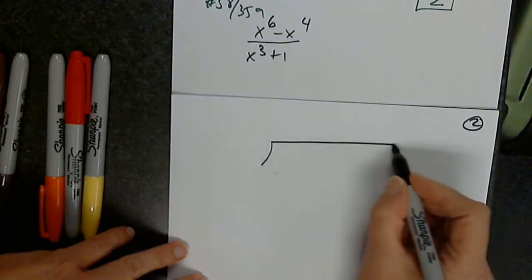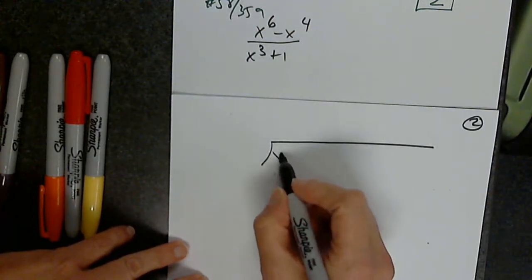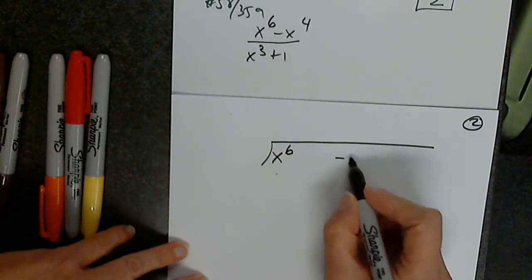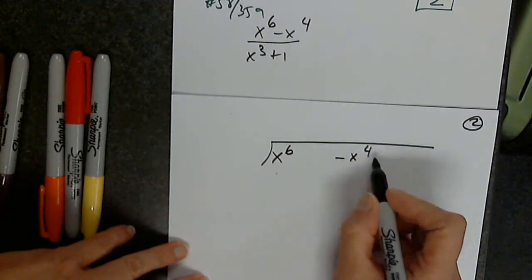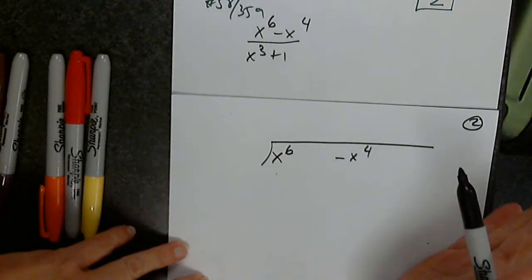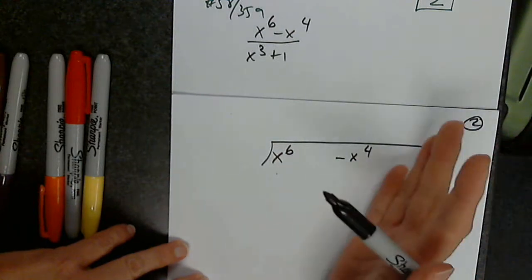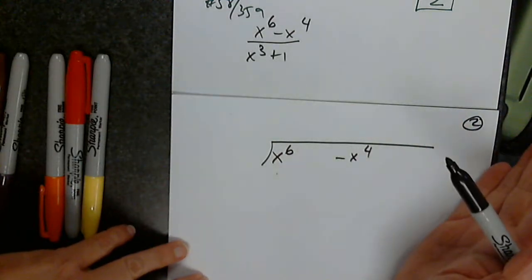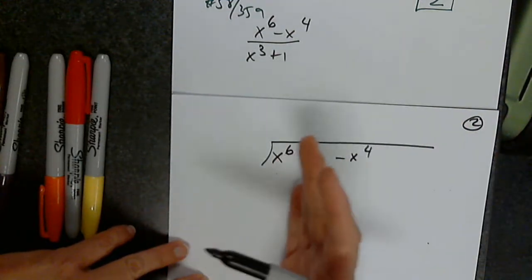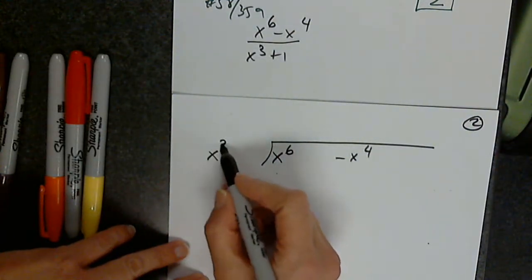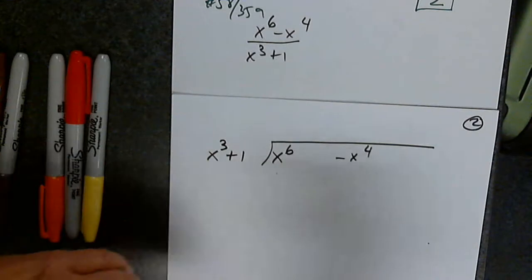So then I'll have x to the sixth, x to the fifth is gone, negative x to the fourth, and the rest is fine. Because I have room to the right. I need room between these two. So then x cubed plus one.